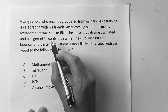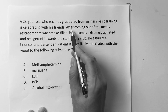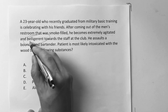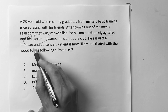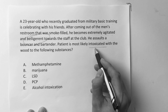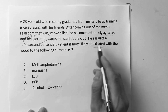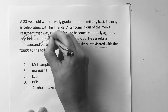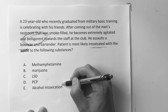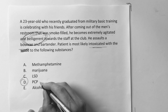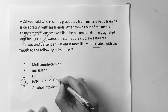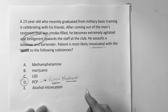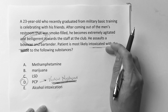A 23-year-old who recently graduated from military basic training is celebrating with friends. After coming out of a smoke-filled men's restroom, he becomes extremely agitated and belligerent towards staff at the club. He assaults a bouncer and bartender. Anytime you see belligerent, someone just out of control, go through your answer choices and put PCP. The pathognomonic sign of PCP is vertical nystagmus — that comes up on any mental health or psychiatry exam. Beware of that on your Steps.